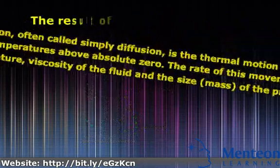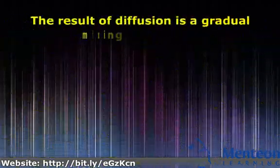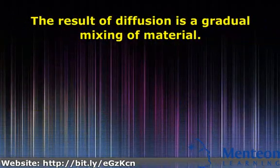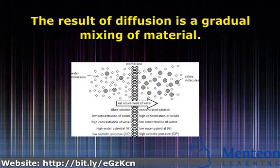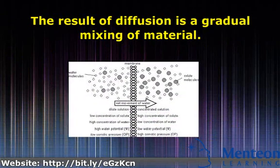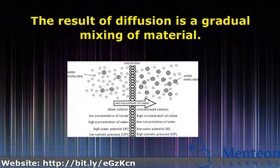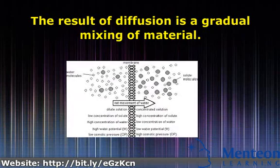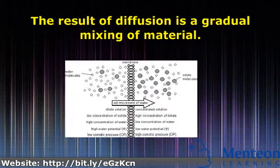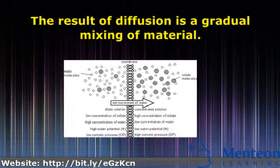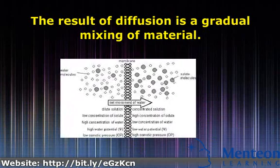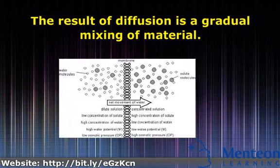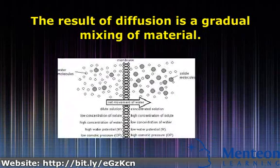Diffusion explains the net flux of molecules from a region of higher concentration to one of lower concentration, but it is important to note that diffusion also occurs when there is no concentration gradient. The result of diffusion is a gradual mixing of material.